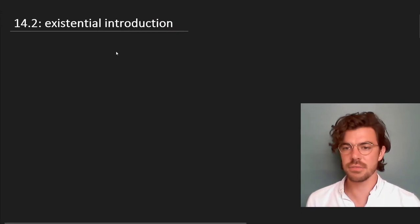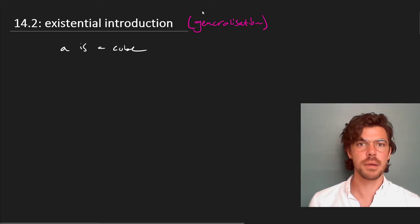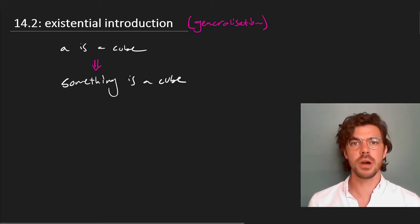The second rule we're going to look at is that of existential introduction, sometimes called generalization. On this rule, we take a statement about something by name, for instance, A is a cube, and come up with a more general claim that something is a cube. Now this may seem obvious,